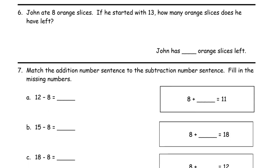Number 6. John ate 8 orange slices. If he started with 13, how many orange slices does he have left? I'm going to use the take from 10 on this one. 13 minus 8 equals 13 is 10, 3. When I take 8 away from the 10, I'll have 2 left. 2 plus 3 equals 5. John has 5 orange slices left.